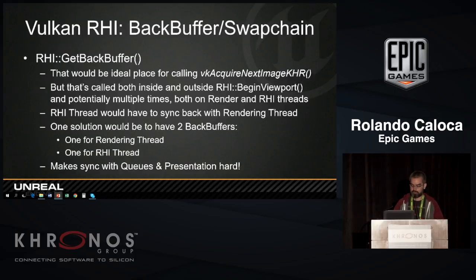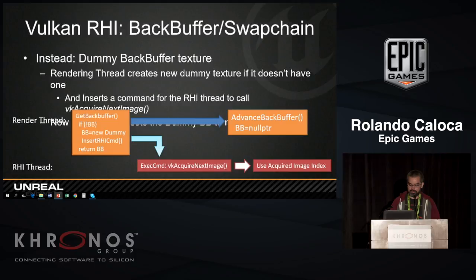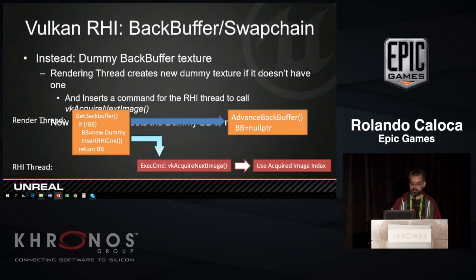This means the RHI thread would have to talk back to the rendering thread, which we don't want — the pattern is game to render to RHI to Vulkan. So instead what we did is make a dummy back buffer texture. The render calls get back buffer, and if it doesn't have one stored, it allocates a new one and inserts an RHI command — that RHI command actually calls vkAcquireNextImage. If it has one, it just returns the already-allocated one. At some point later in the frame, the renderer says advance the back buffer, setting that pointer to null.